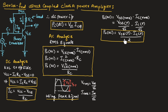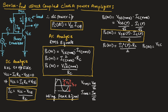We can also write output AC power in terms of current and resistance as P0_AC equal to IC_peak² into RC divided by 2, and in terms of voltage and resistance as P0_AC equal to VCE_peak² divided by 2·RC.